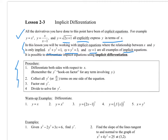Here's our procedure: differentiate both sides with respect to x. Then — and here's the key — y prime is a hook-on factor for any term involving y. Collect all the y primes on one side (this is where the solving from the previous example helps), factor out the y prime, and then divide to solve for y prime.